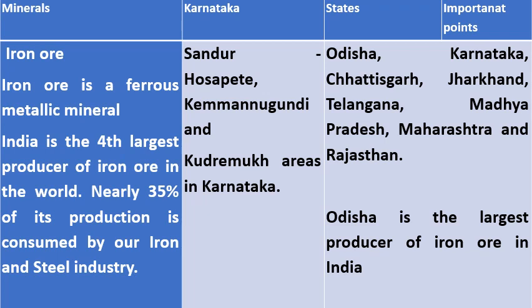Here in this table, I have given you the details of iron ore. Iron ore is a ferrous metallic mineral. India is the fourth largest producer of iron in the world. Nearly 35% of its production is consumed by our own iron and steel industry. For example, Vishweshwarya Iron and Steel Industry, Tata Iron and Steel Industry, Jamshedpur, Bokaro, Bhilai, Visakhapatnam and Salem Iron and Steel Industries. In Karnataka, we get iron reserves at Sandur, Hospet, Kemmanagundi and Kudremukh. In India, Odisha is the largest producer of iron ore.